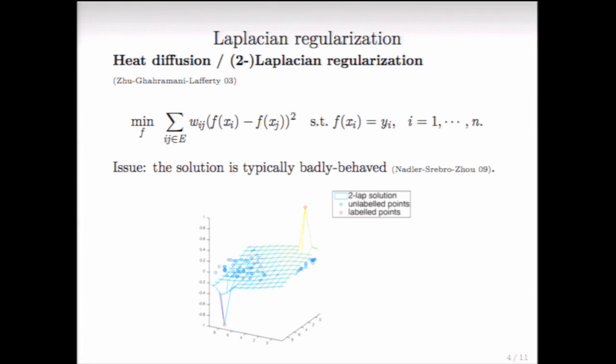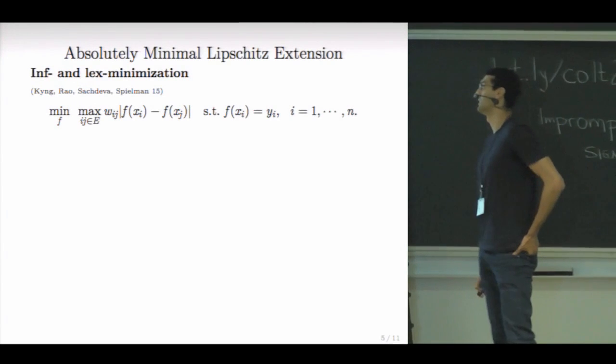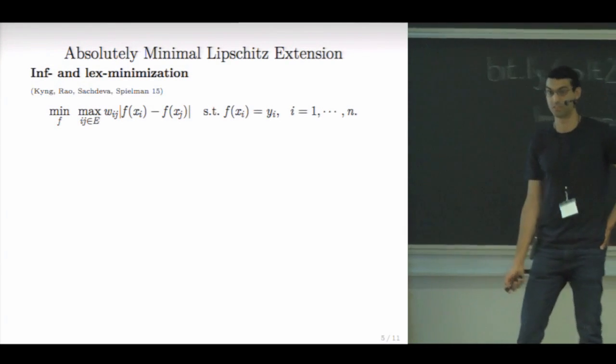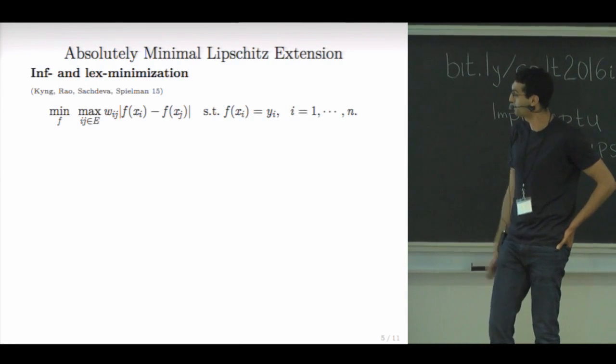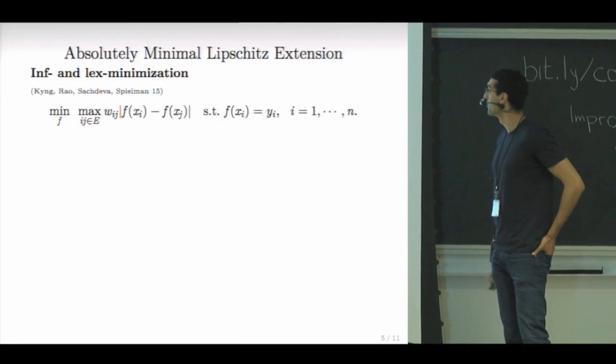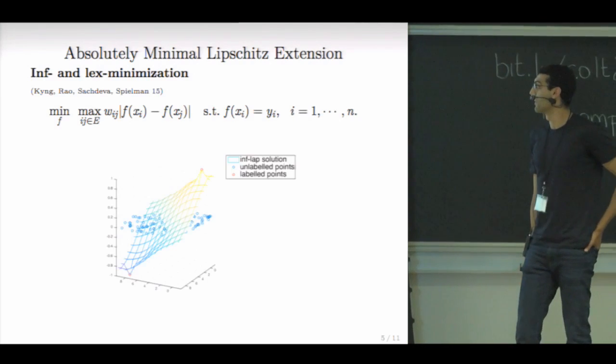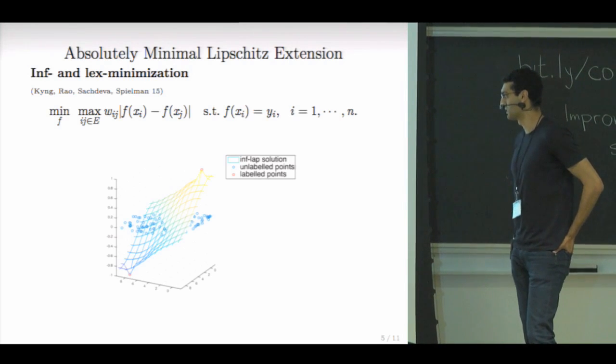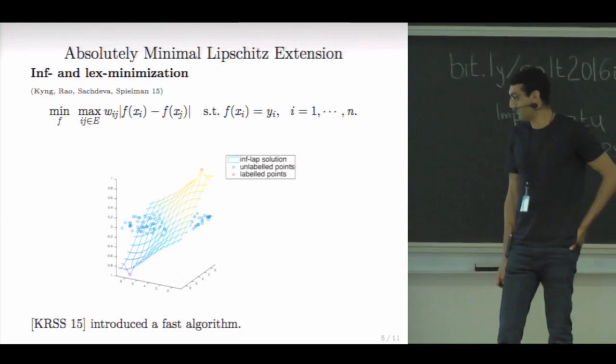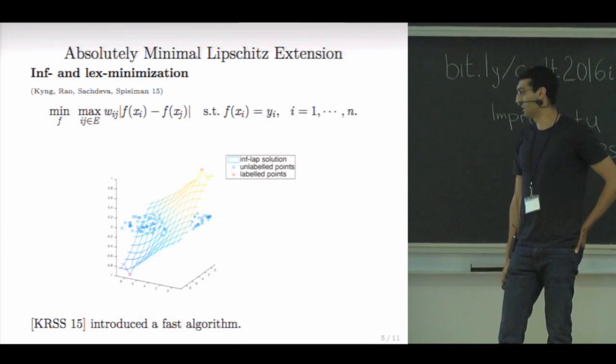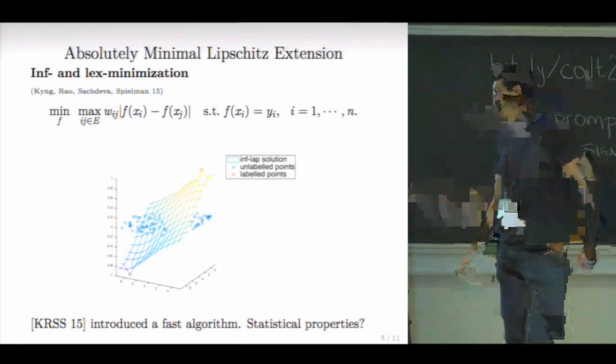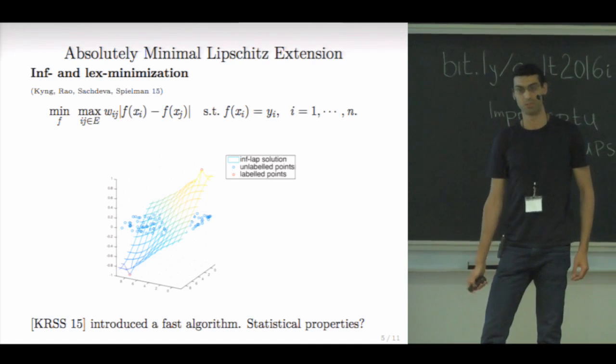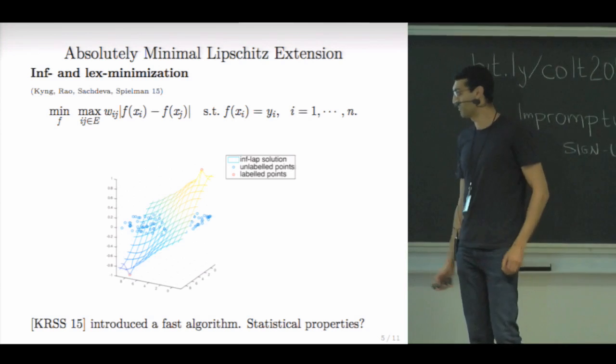So last year here in the same conference, this method was proposed and instead of minimizing the quadratic form that is given by the Laplacian, we just minimize the maximal discrepancy of the function along every edge, subject, of course, to the measurements constraints. And if I run this on the previous example, I get something that is much more sensible. So last year they proposed a fast algorithm for solving this optimization problem and the statistical question of what are the statistical properties of this estimator are still open and this is our main motivation for studying this problem. So we'll try to make a first step towards that.